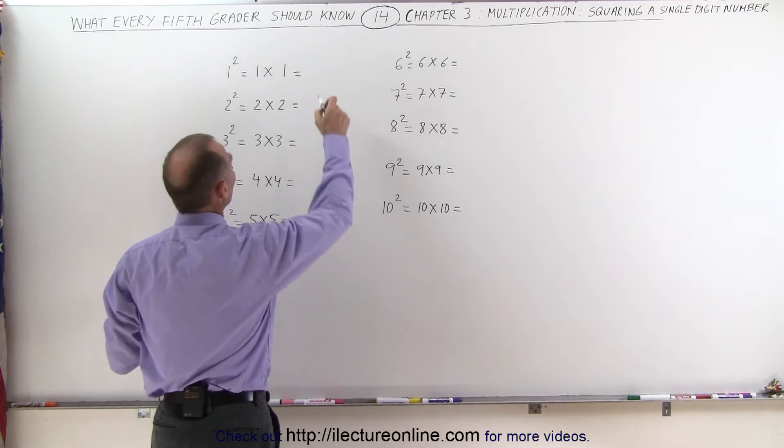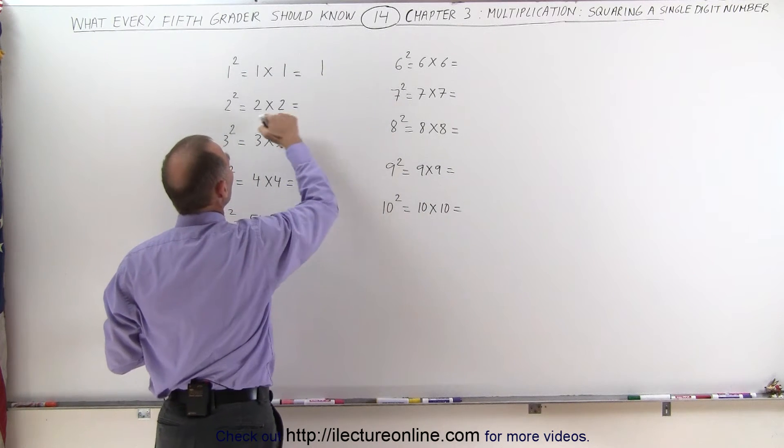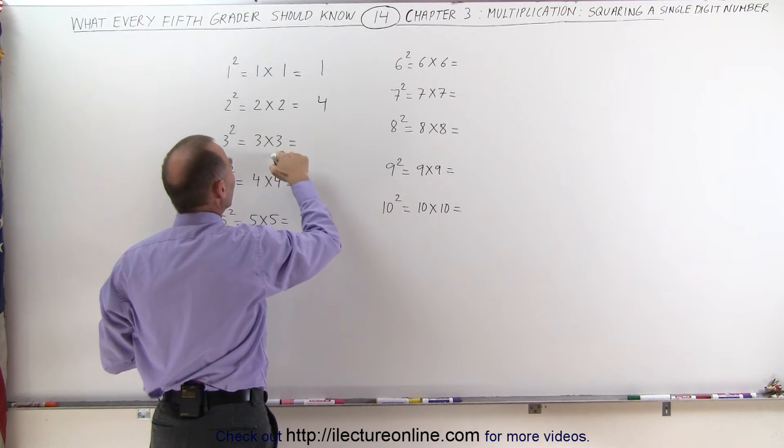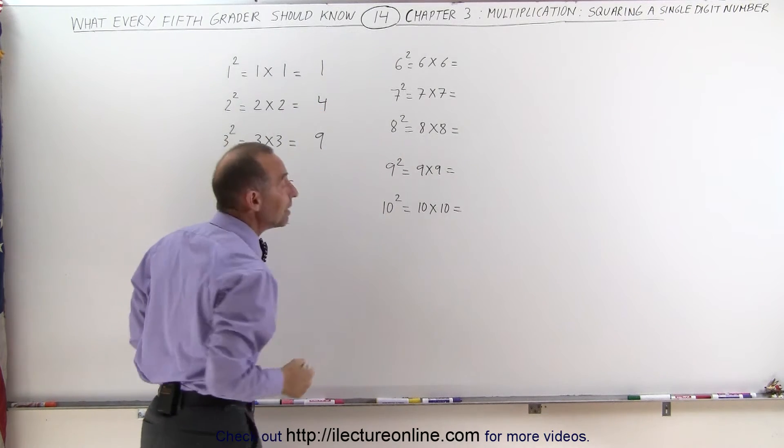1 times 1 is easy, if you only have 1 of the 1's, that's equal to 1. 2 times 2, 4. 3 times 3 is equal to 9. Those should be easy to remember.